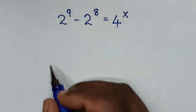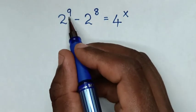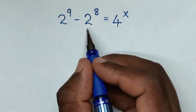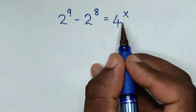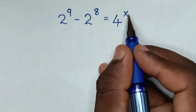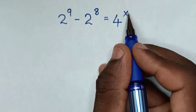Hello! How to solve 2 power 9 minus 2 power 8 is equal to 4 power x, to find the value of x?